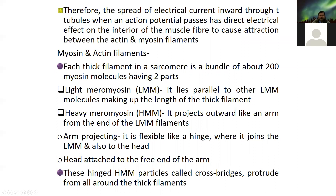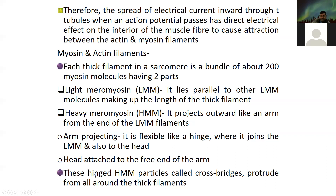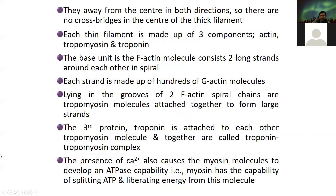One thick filament is called the myosin filament. In the sarcomere, it is a bundle of about 200 myosin molecules. This has two parts — one is light and one is heavy — placed parallel to the molecules making up the length of the thick filament. The light meromyosin is placed parallel, whereas the heavy meromyosin is arm-type, like a hook, which provides the site where the actin filament combines. The arm projecting is flexible like a hinge where it joins the light meromyosin and also to the head. These hinged heavy meromyosin particles, also known as cross-bridges, protrude from all around the thick filaments.